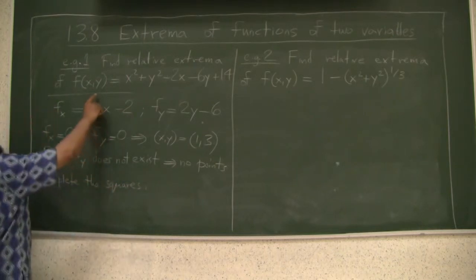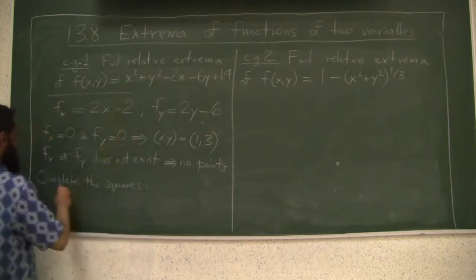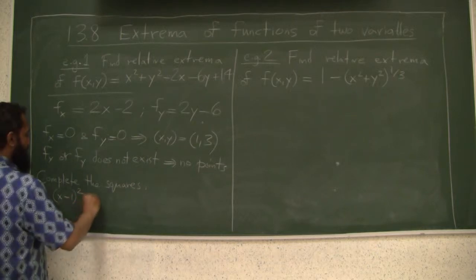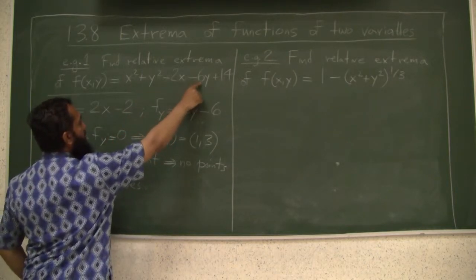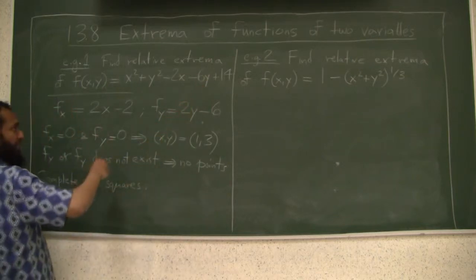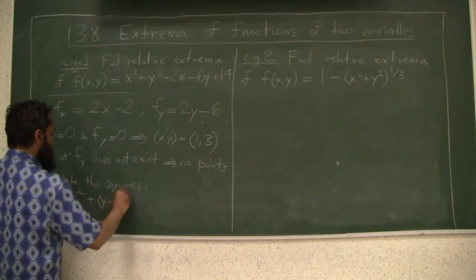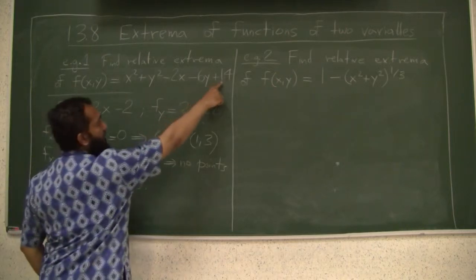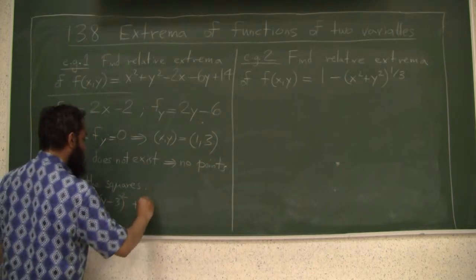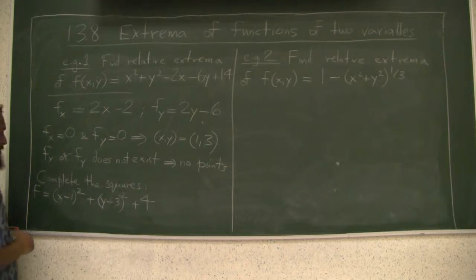So if you complete the squares, you have x squared minus 2x plus 1, then we will go with that. So that will give you x minus 1 squared plus y squared minus 6y, so that is minus 2 times 3y, so you need plus 9. So this is y minus 3 squared plus 9 right here, plus 1, that is 10. We still have 4 left. So you will have this. This is your function f.